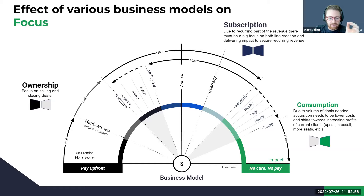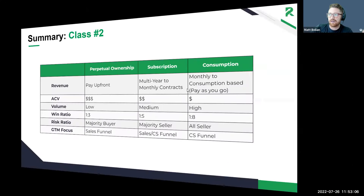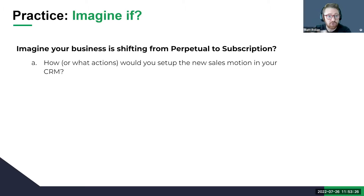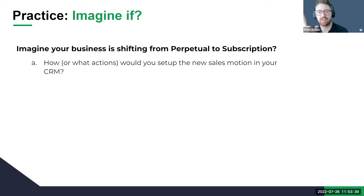We are at 11:52. There are more questions in here, but I'm going to go over our homework for today. Practicum: imagine if your business was shifting from perpetual to subscription — what actions would you set up for the new sales motion in your CRM? I'm going from perpetual ownership to subscription. The most important thing, and a relic of our ownership past, is you must start tracking customer life cycle post-contract.